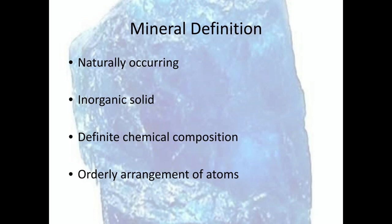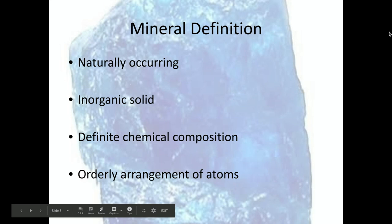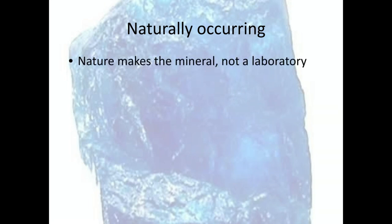My goal is to get through at least one of these today. Let's start with what it means to be naturally occurring. Again, if a substance does not match all four criteria, it fails the definition of being a mineral. Naturally occurring basically means it happens naturally in nature — nature makes the substance. It cannot be made in any kind of laboratory or factory.